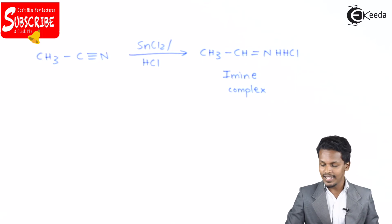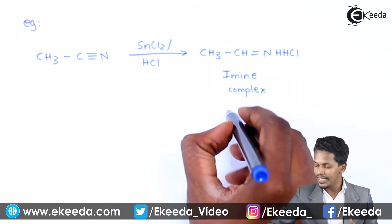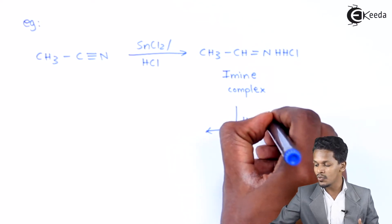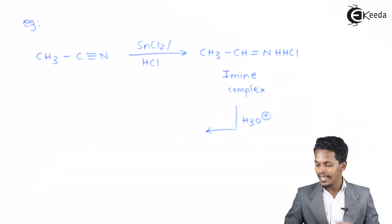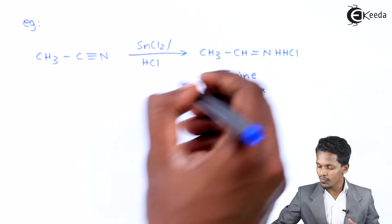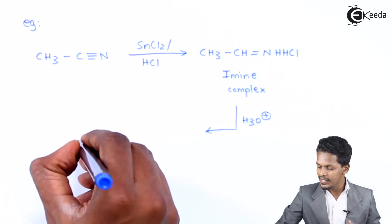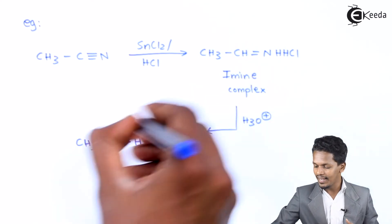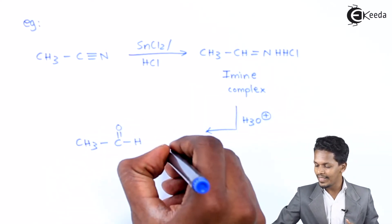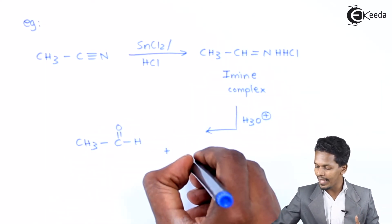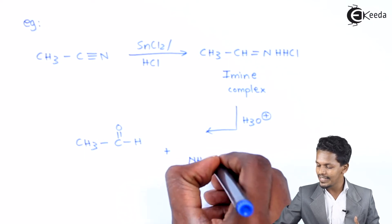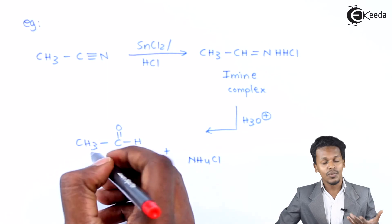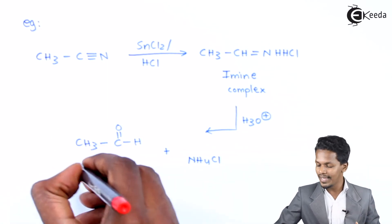As mentioned earlier, the reaction doesn't stop here — obviously we have to react it with an acidic solution, i.e., it undergoes acid hydrolysis. The product formed is CH₃-CHO, while the rest is removed as a by-product in the form of NH₄Cl. The product formed is known as acetaldehyde or ethanal.